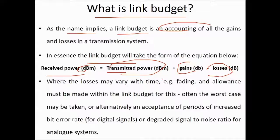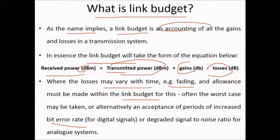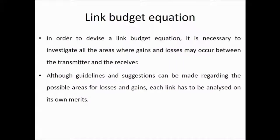Losses may vary with time — for example, fading — and allowance must be made within the link budget for this. Often the worst case may be taken, or alternatively an acceptance of periods of increased bit error rate for digital signals or degraded signal-to-noise ratio for analog systems. In order to devise a link budget equation, it is necessary to investigate all areas where gains and losses may occur between the transmitter and the receiver.